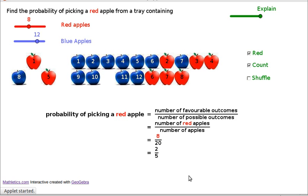So if you did your experiment over and over again lots and lots of times, you'd expect two-fifths of the time or 40% of the time you were going to get a red apple and three-fifths of the time you were going to get a blue apple.